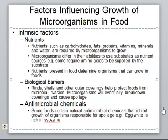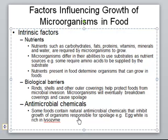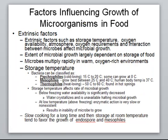Biological barriers are basically the skin of the food. A tomato with intact skin will not go bad as quickly as a tomato with damaged skin. Most foods have some kind of cover or skin that prevents spoilage. Additionally, some foods produce antimicrobial enzymes — for example, lysozyme — which attack and destroy bacteria. These are all intrinsic factors found within the food.